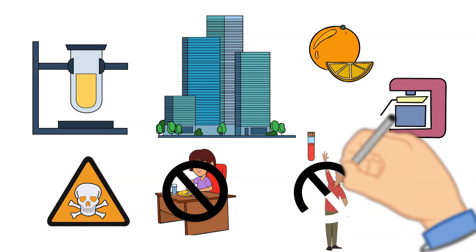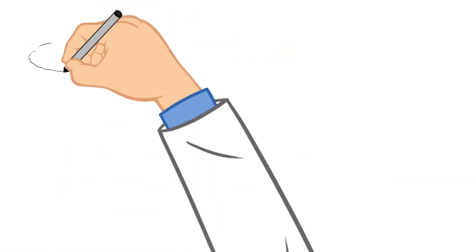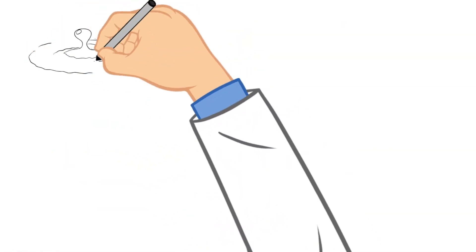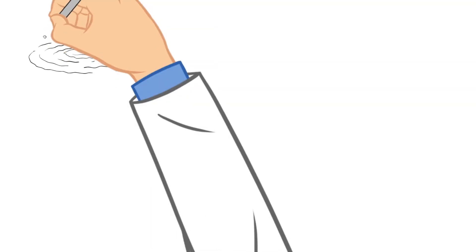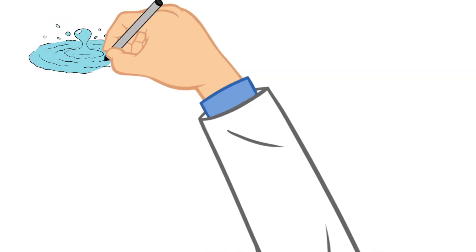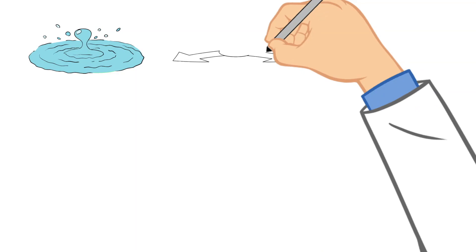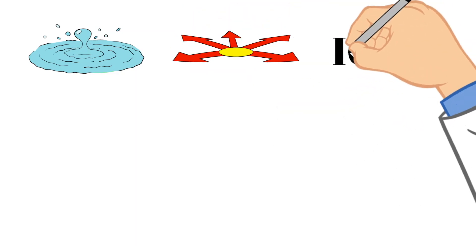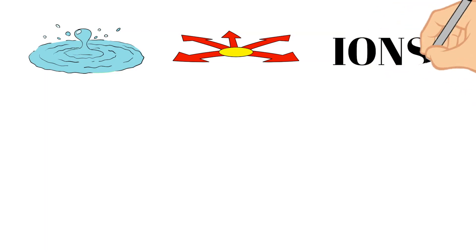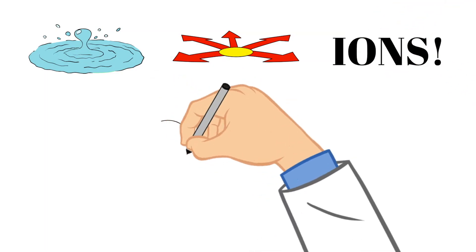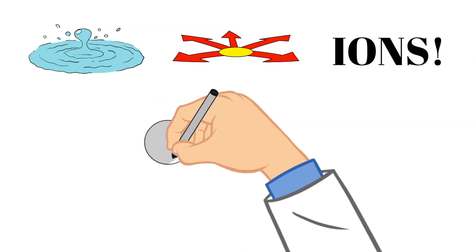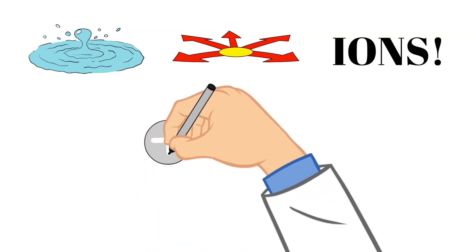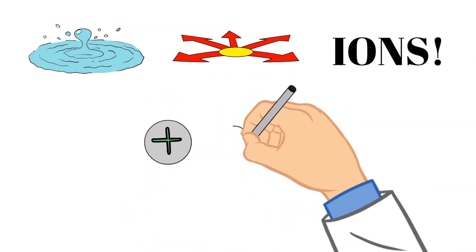So what makes something an acid or a base? When combined with other substances, for example water, they dissociate, which just is a big word that means they break up. And they produce what is called ions. Ions are just a fancy word for different particles that have either a positive or a negative charge.